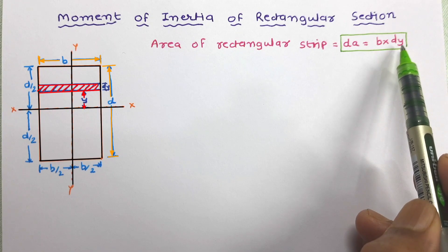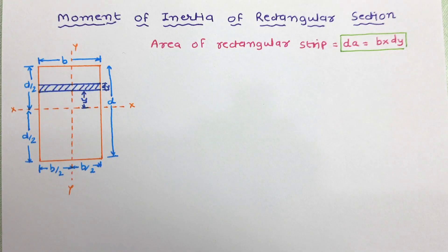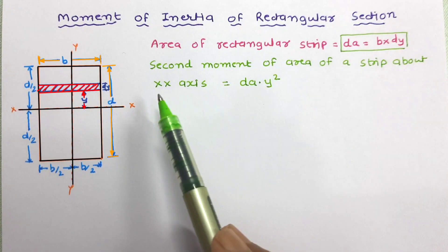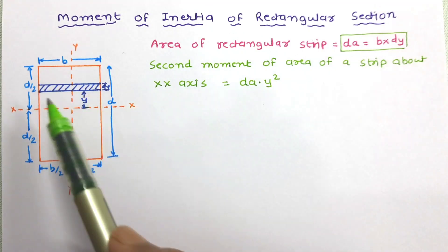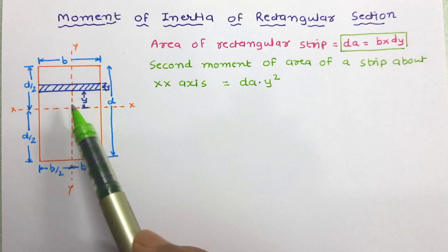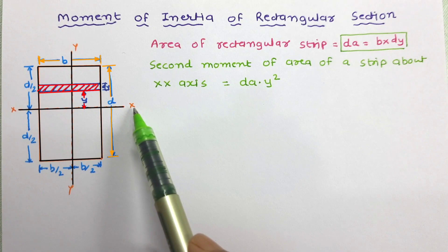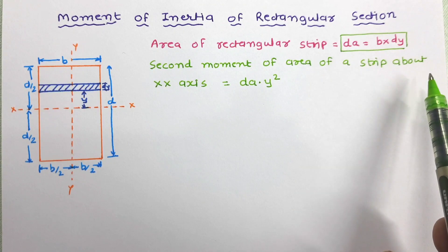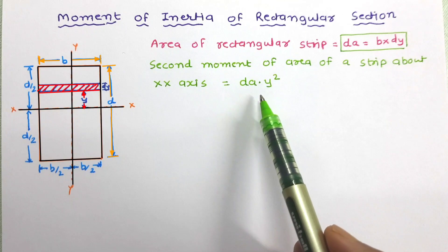Now let us work out the second moment of area of the strip about the XX axis. The second moment of area of the strip about the XX axis equals area times distance squared. The area of this strip is dA and the distance of this strip from the axis about which we want to work out moment of inertia is y. So the second moment of area, or moment of inertia, of the strip about the XX axis is dA times y squared.